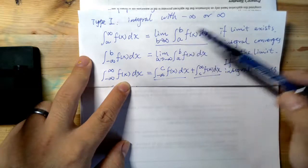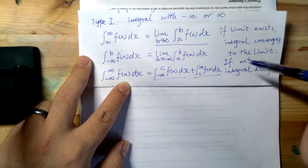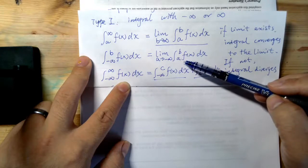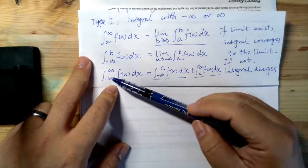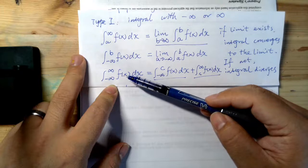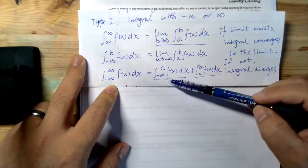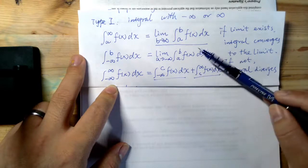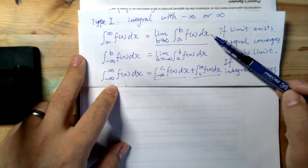If this limit exists, we call that the integral converges to that limit. And if not, we claim that integral is diverged. Same deal for the other situation — you can evaluate the integral and let a go to negative infinity to see what happens. For the type from negative infinity to positive infinity, you can find an intermediate value c, and then this integral can be written as from negative infinity to c, plus c to positive infinity.